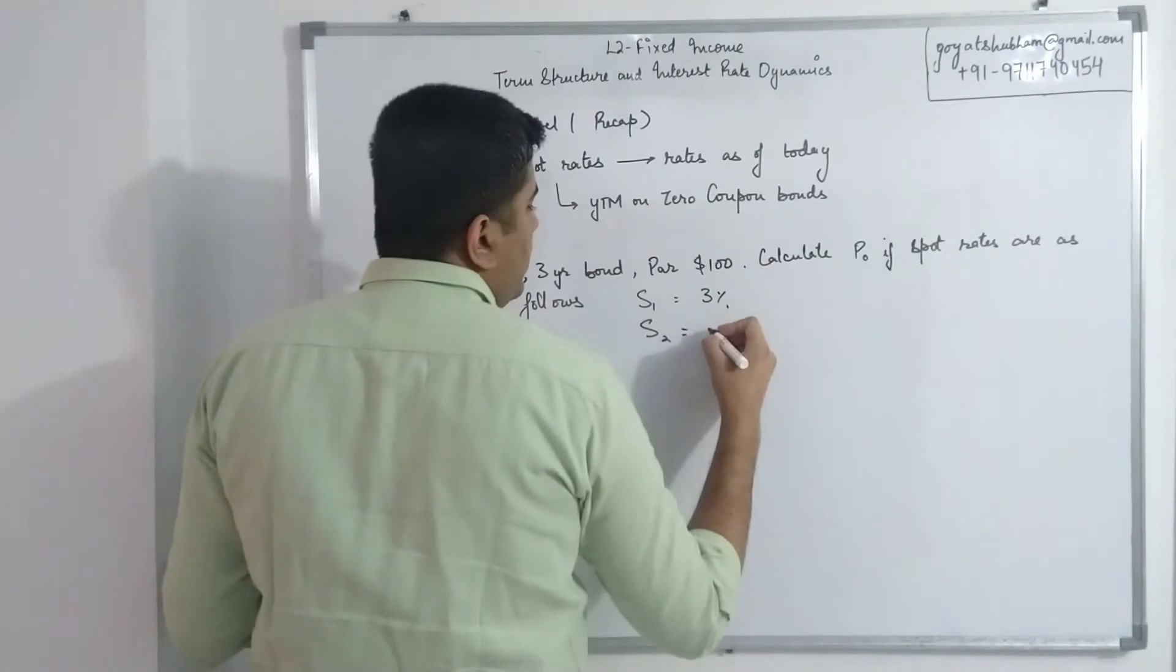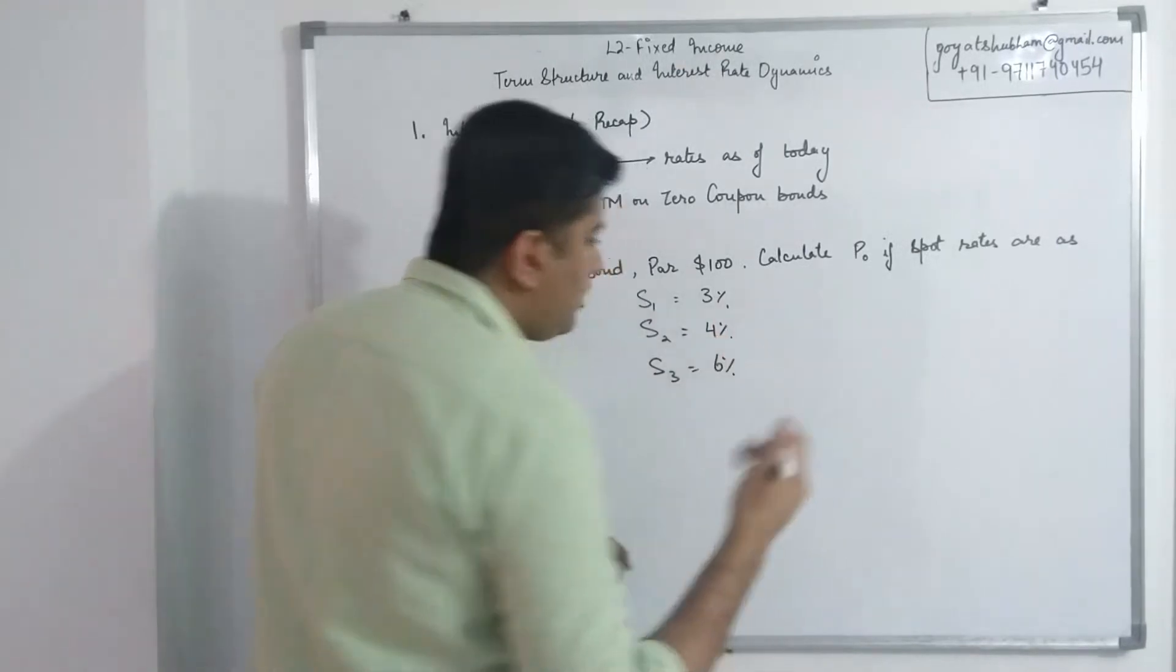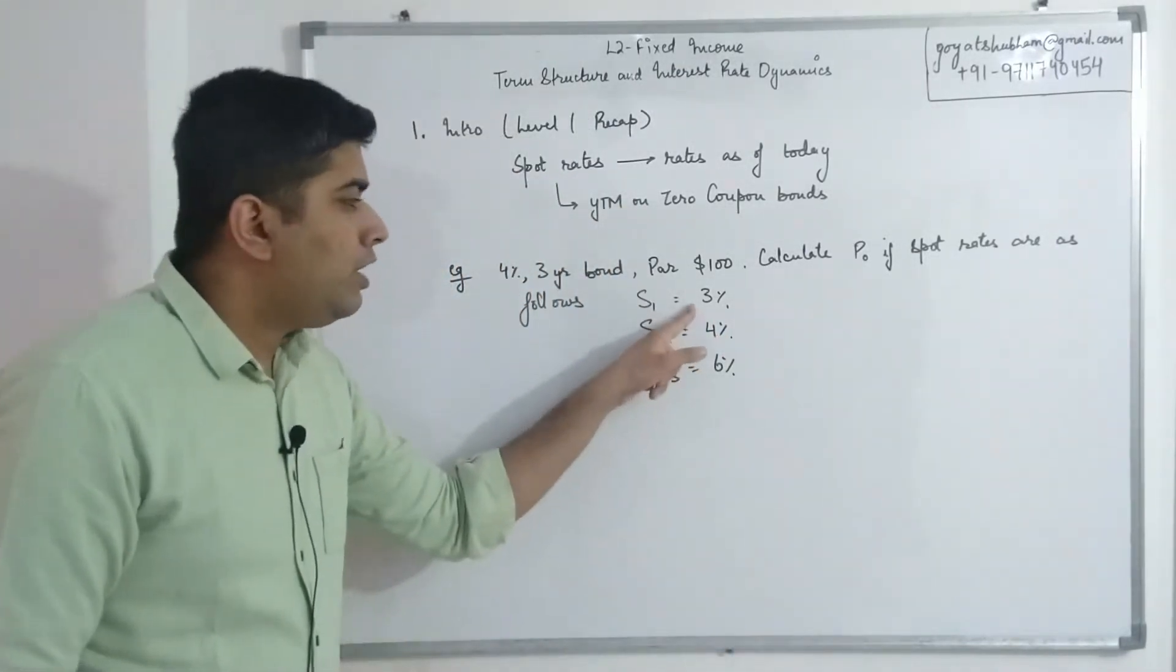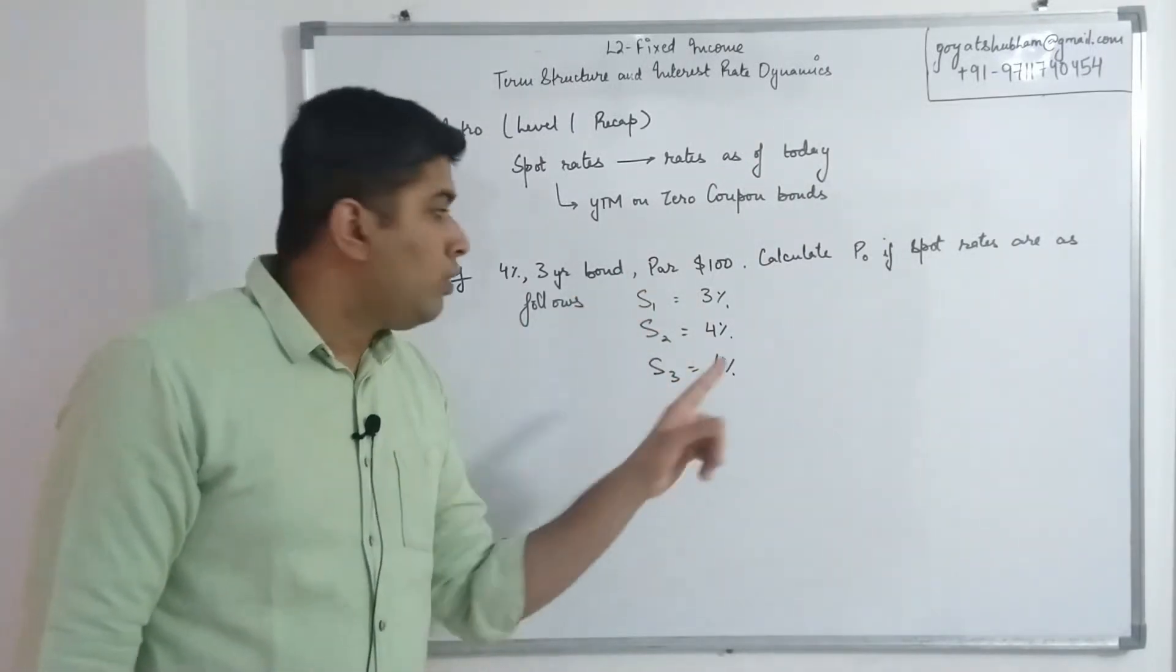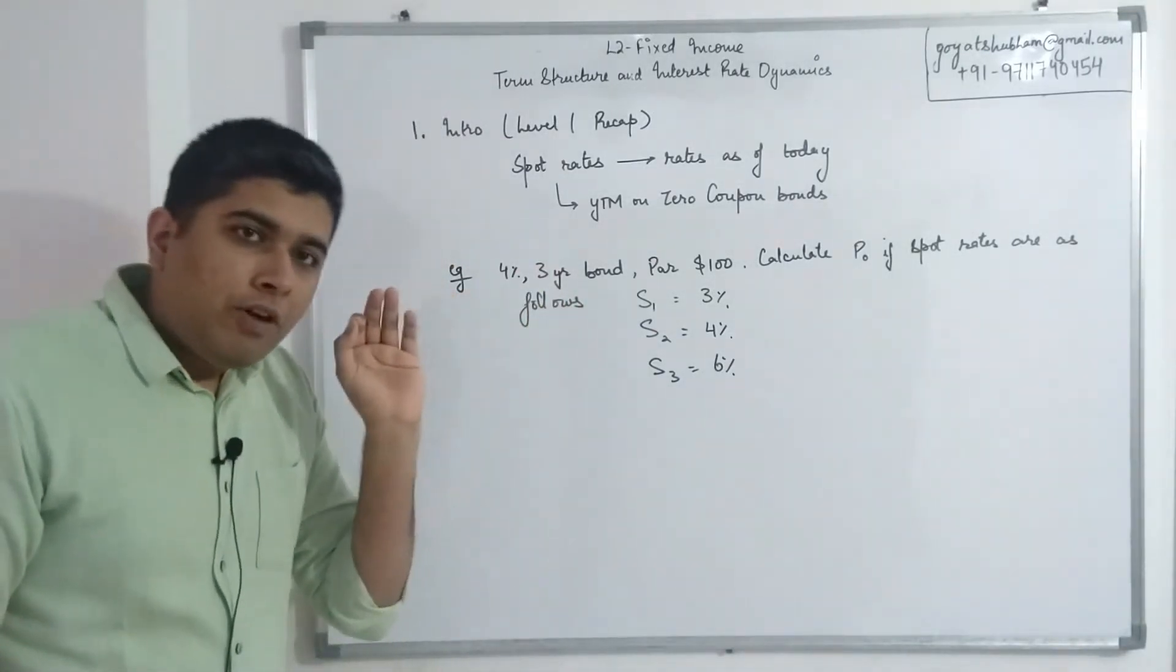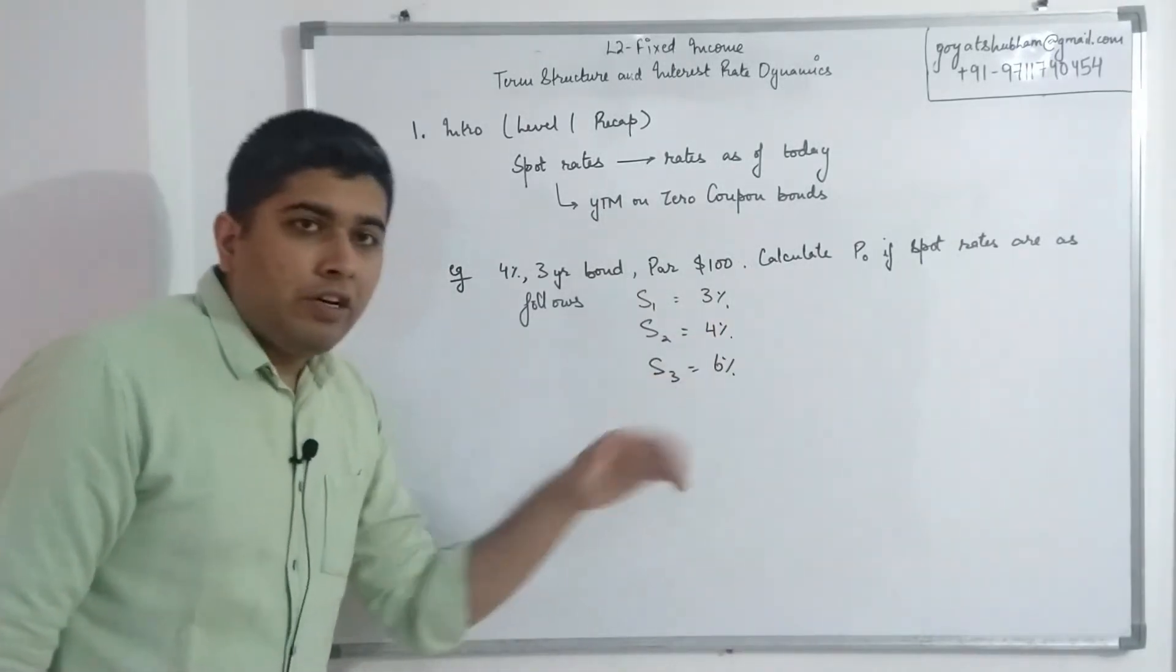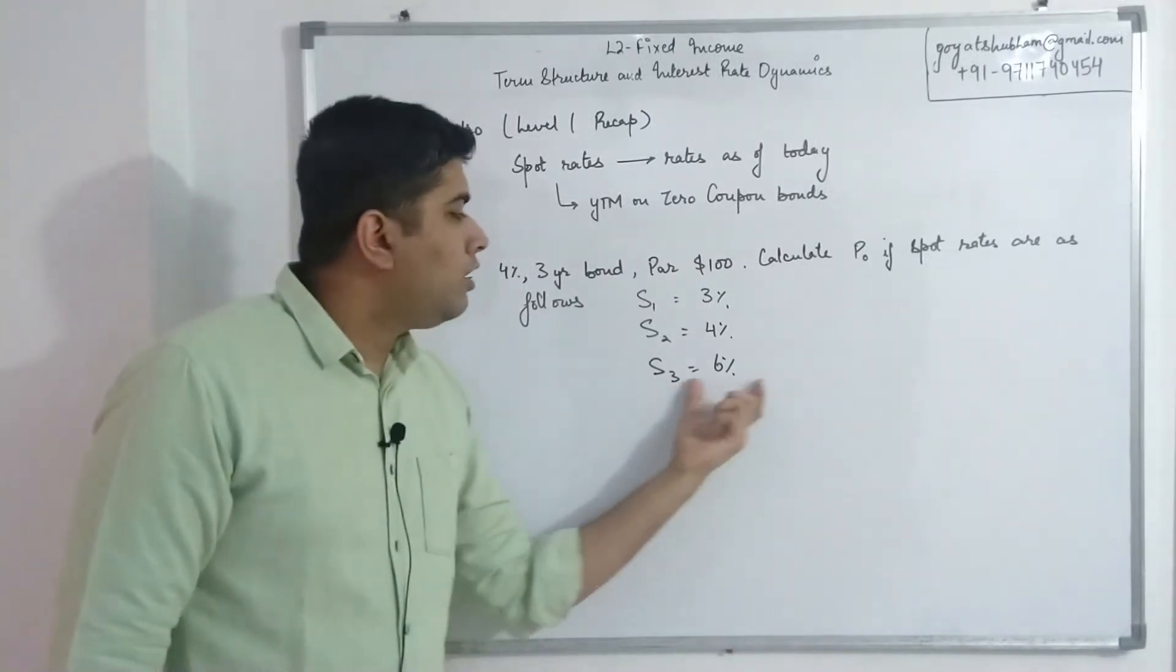Two year spot rate is 4%, and three year spot rate is 6%. These rates simply mean that today if I invest in a security for one year, it would give me a return of 3%. Today if I invest in a security for two years, it would give me 4% per annum. All of these rates are always per annum, which means I'll get 4% every year for the next two years. Then if I invest in a security today which matures in three years, it would give me a per annum return of 6%.